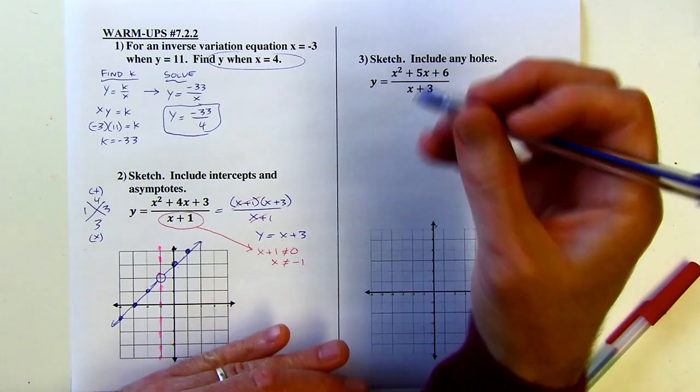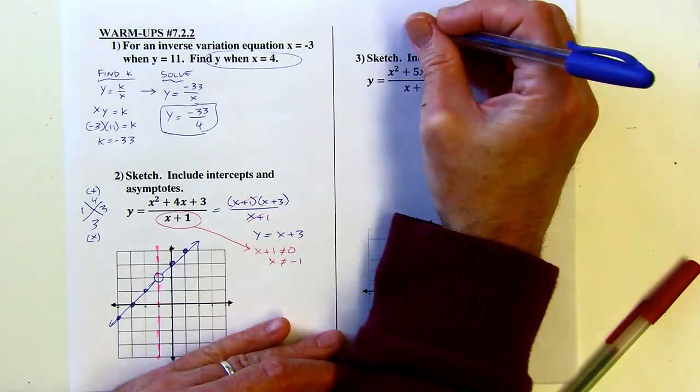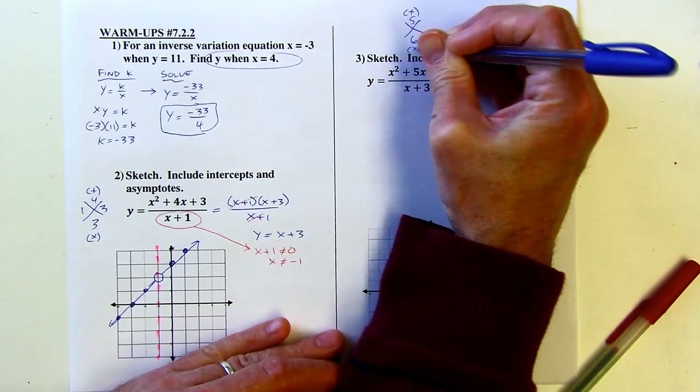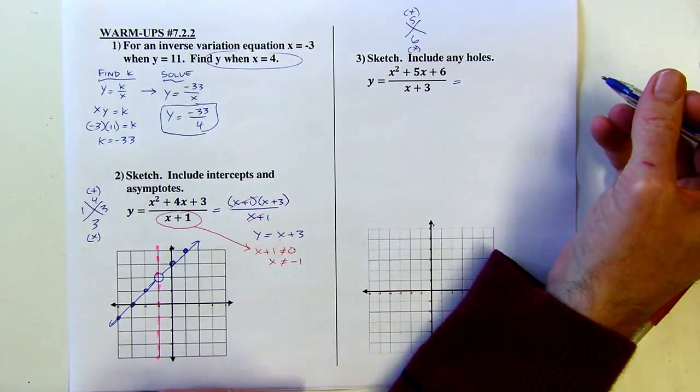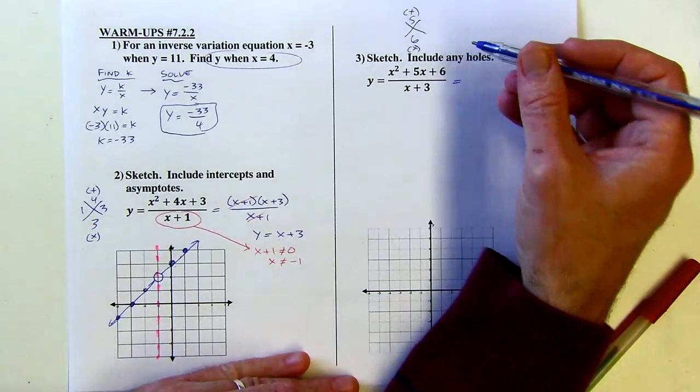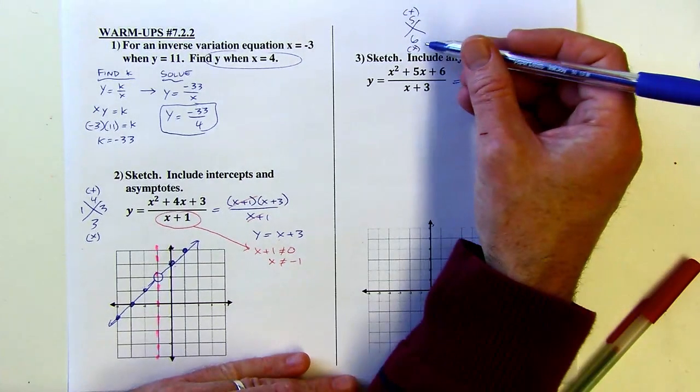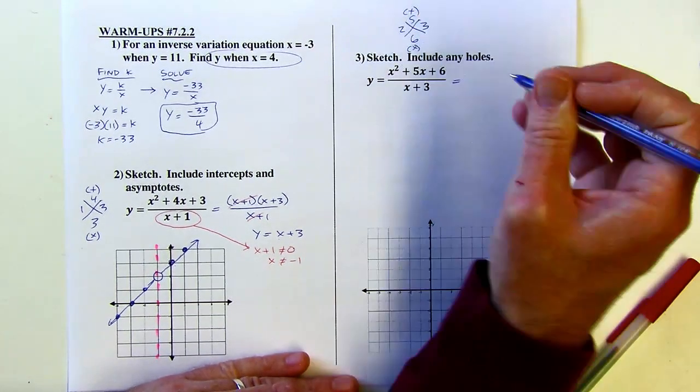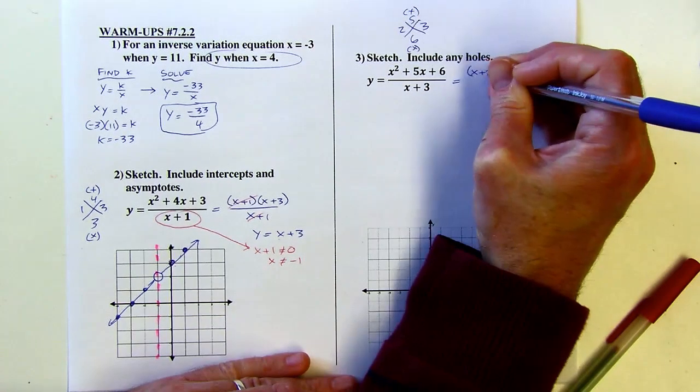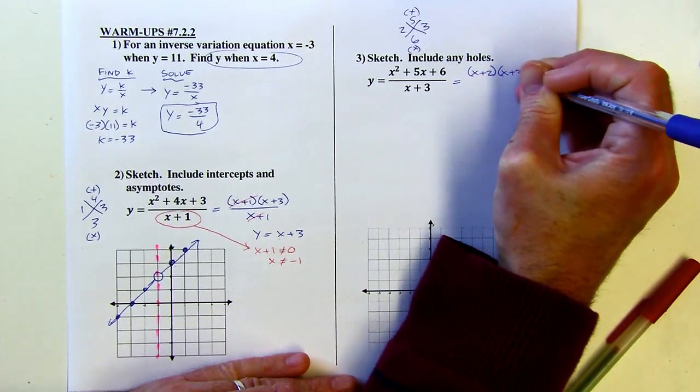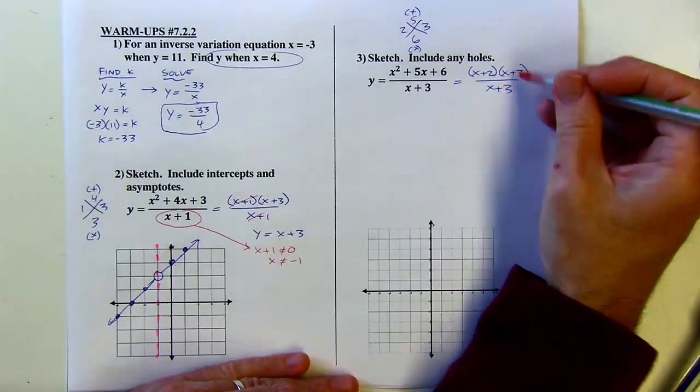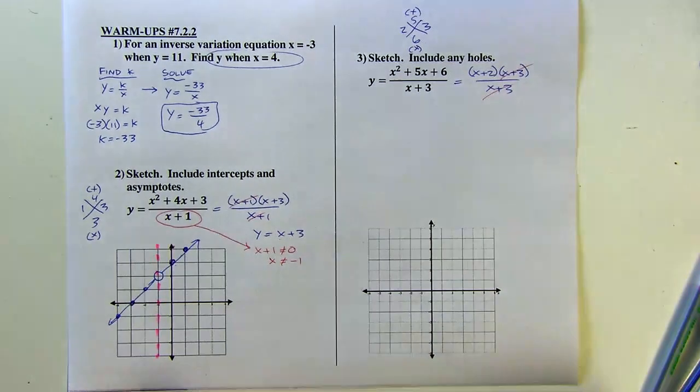Okay. So same kind of deal here. We're going to factor the numerator. And looking for two numbers to add to 5, multiply to 6. Can't use a 1 and a 6 because that would put you at 7, right? So I'm going to have to use 2 and 3. Okay. And now the x plus 3s are going to cancel just in a similar way. The x plus 1s cancel on the last problem.